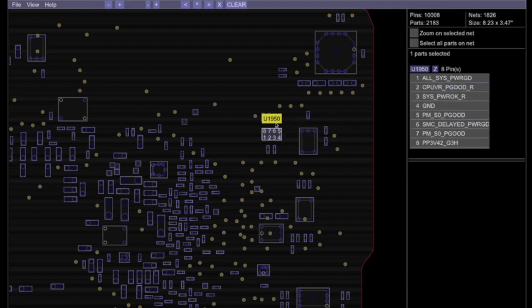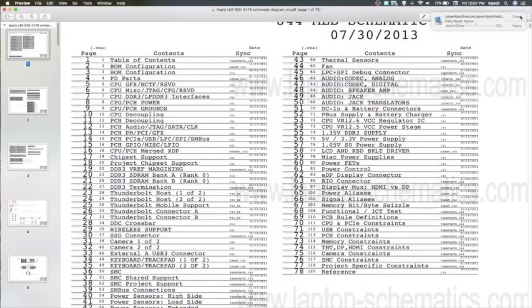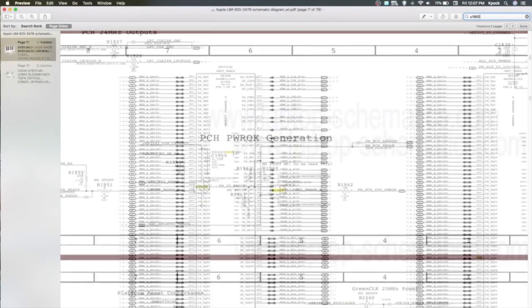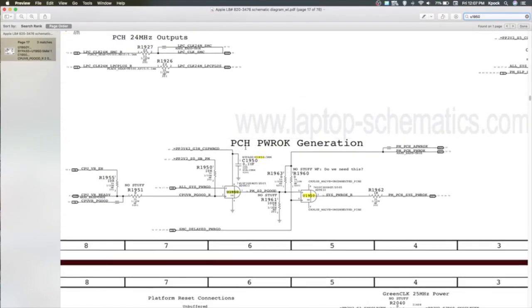Alright, so it's U1950. Let's look at the schematics and type that in. U1950. Alright, so PCH power okay generation. So we're talking about the PCH chip, which is the CPU as well. Both the CPU and the PCH are the same chip on this unit. So that could be the reason that we're not getting any power to the CPU or the PCH, it's just not turning on. So maybe this chip right here, the U1950, and these resistors around it just need to be replaced.